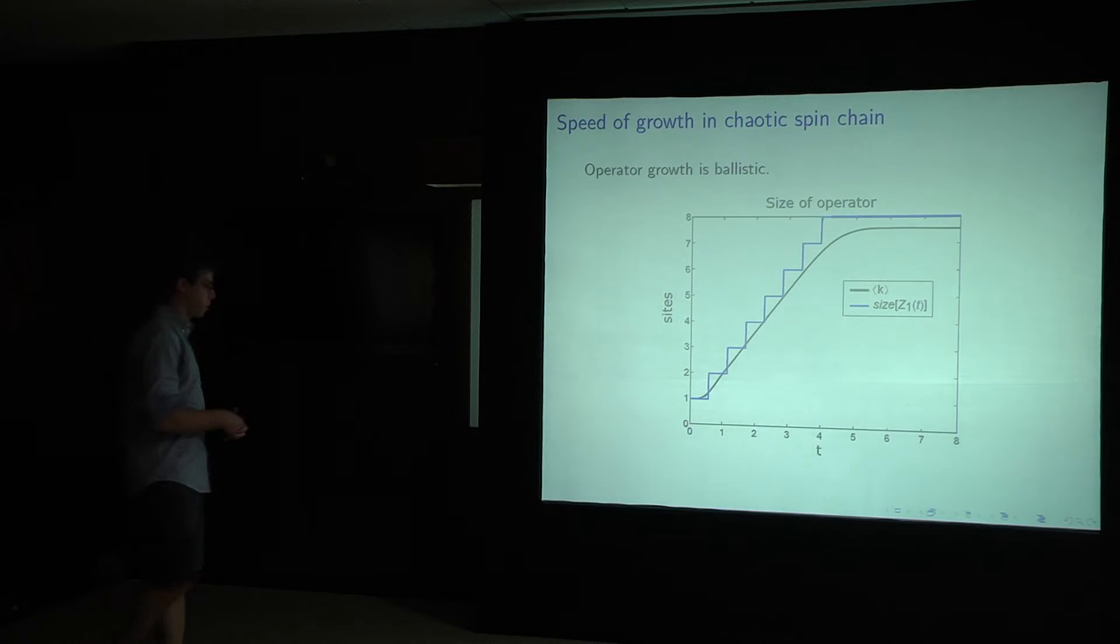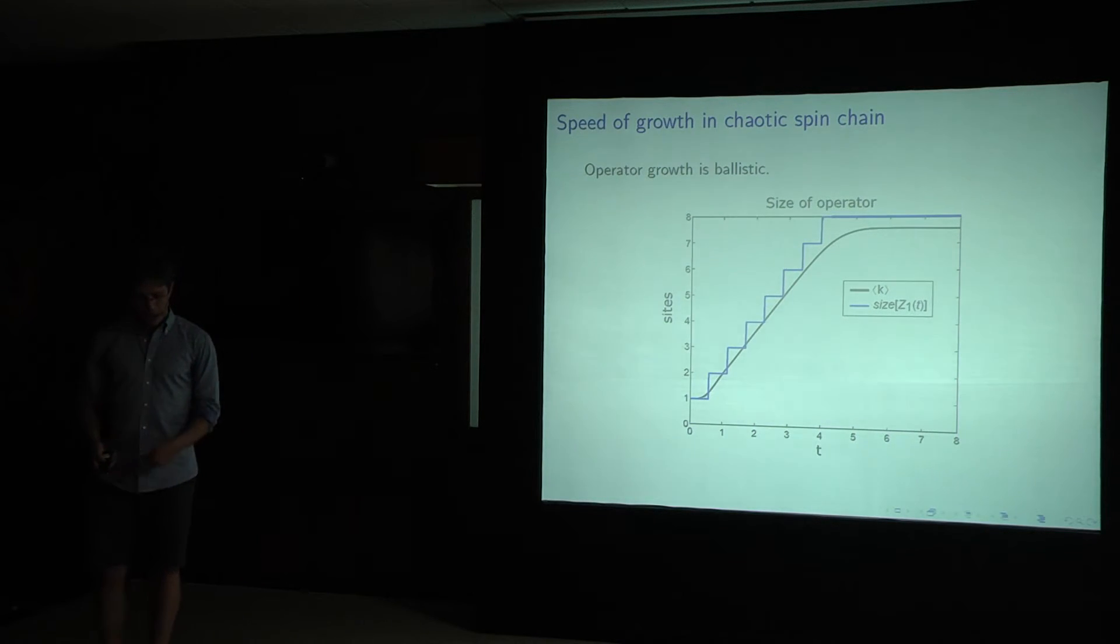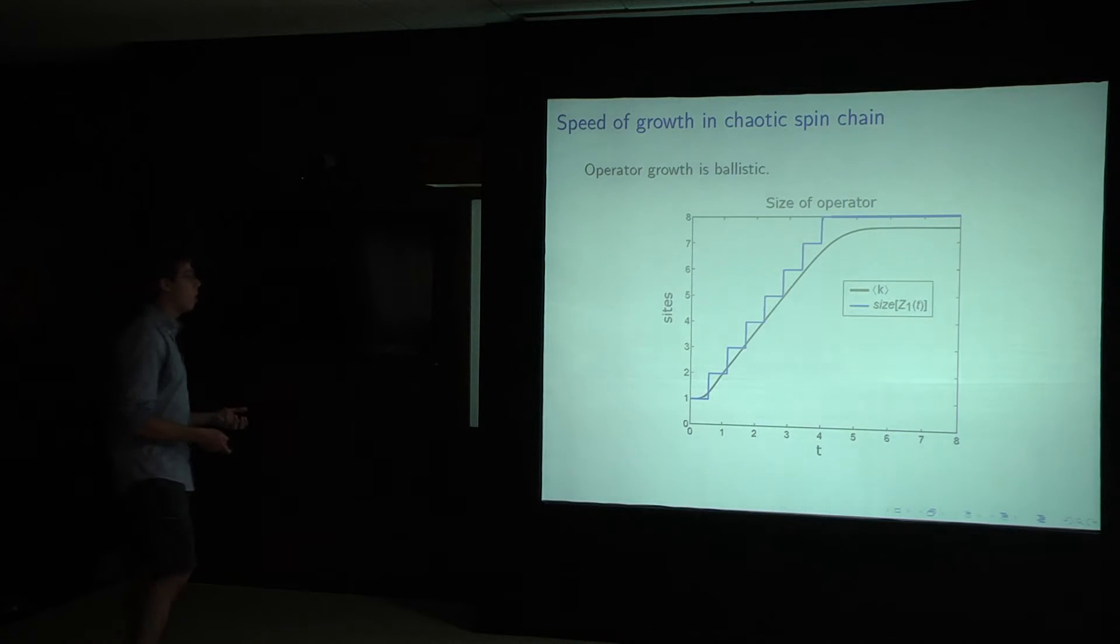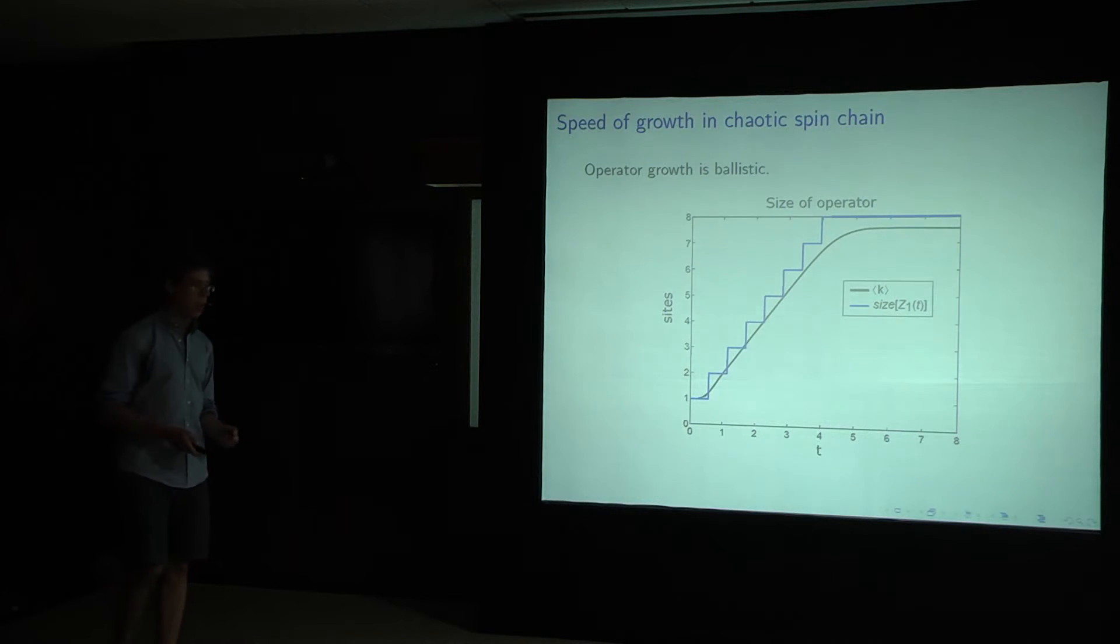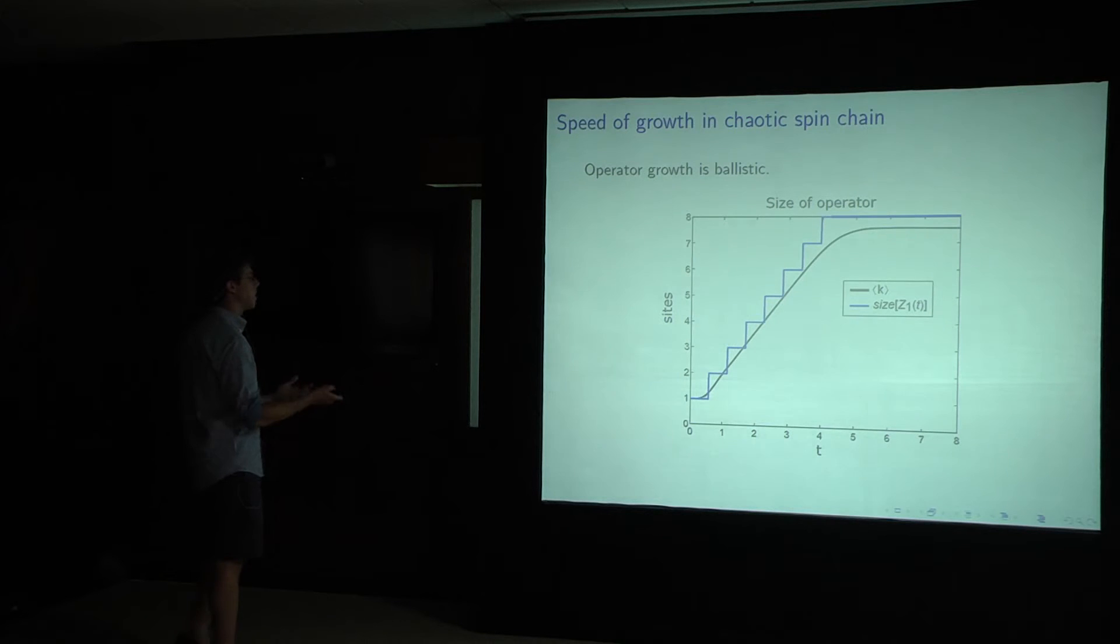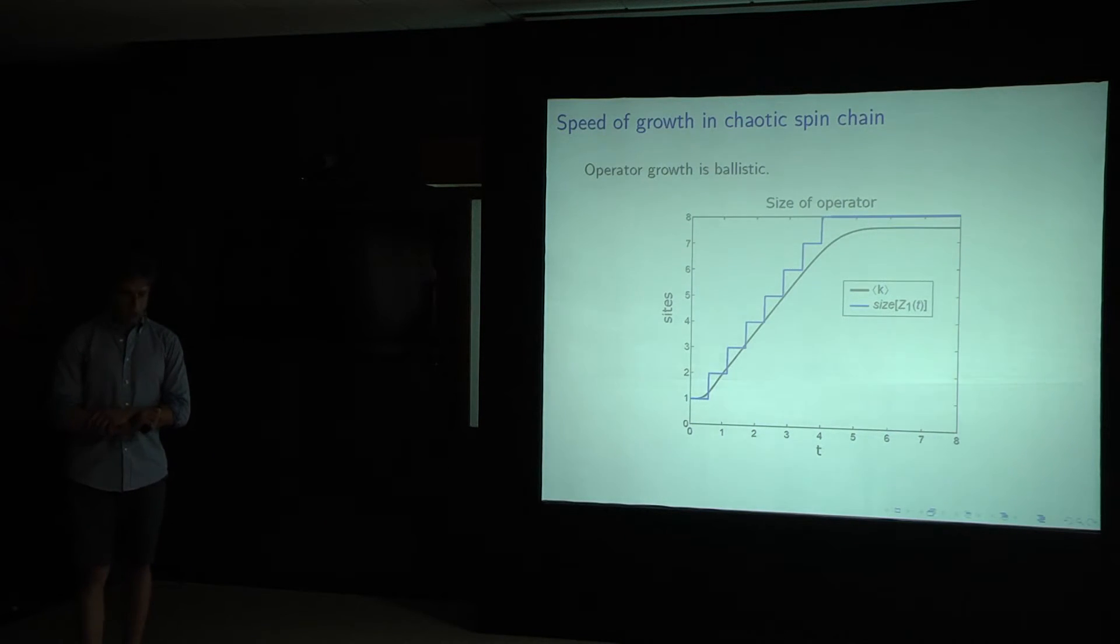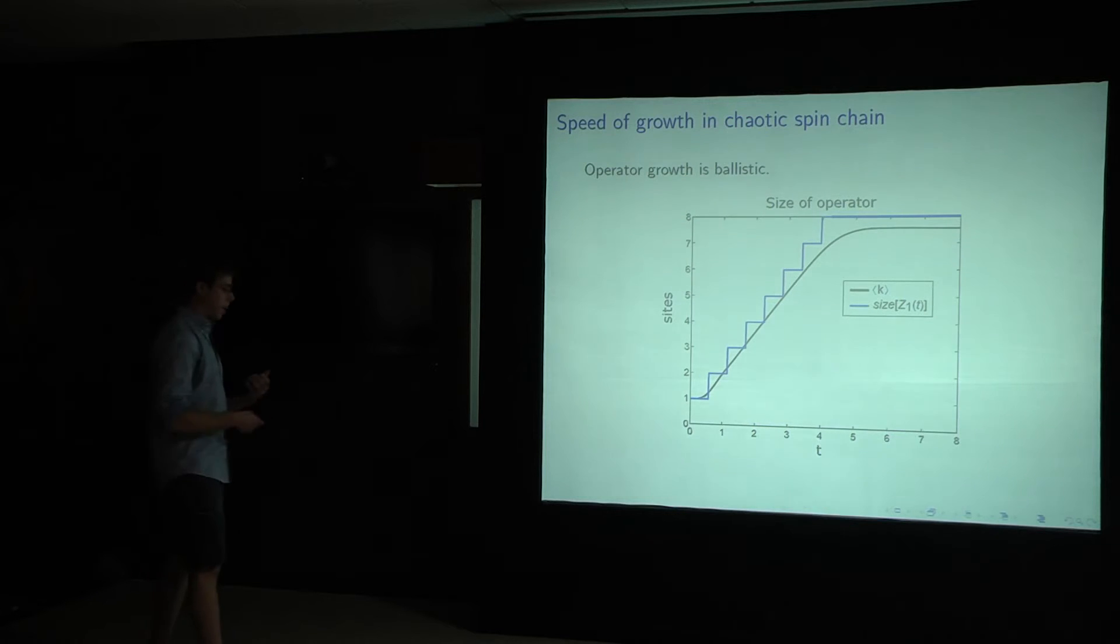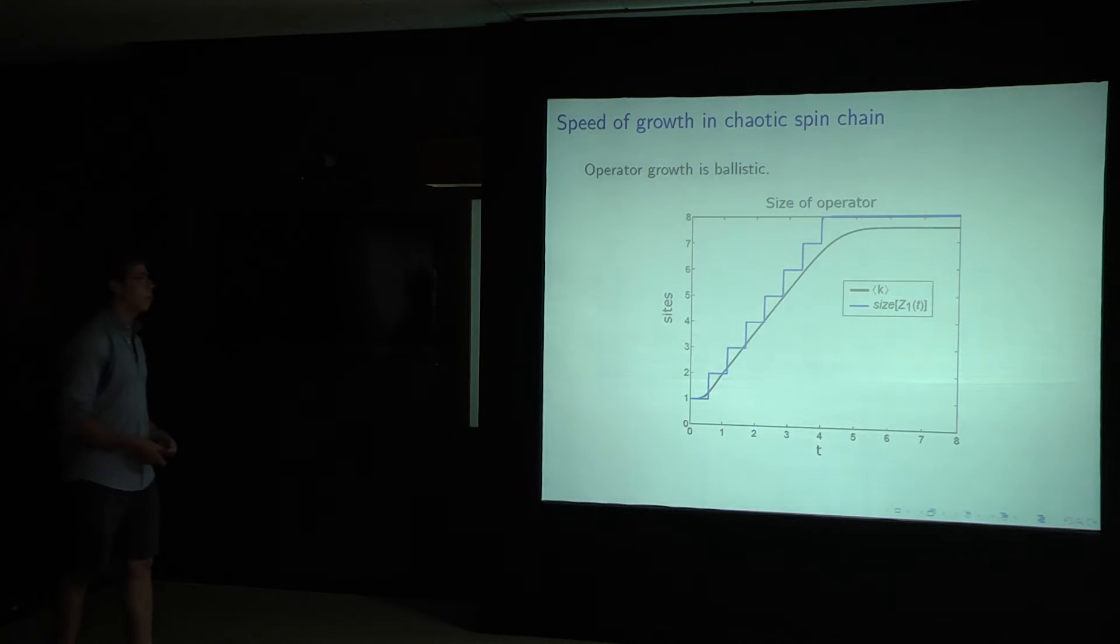I would also mention, so you might, linear for these spin chain systems is the maximum speed it could grow, due to this Lieb-Robinson bound, which unfortunately, if you know what that is, great. Otherwise, I don't have time to go into it now, but it saturates. This is as fast as you can imagine these operators growing.